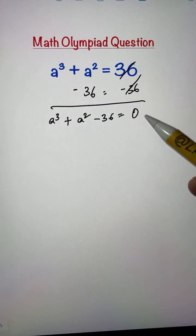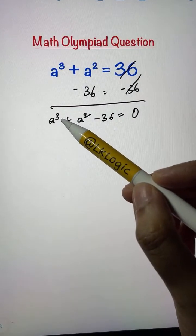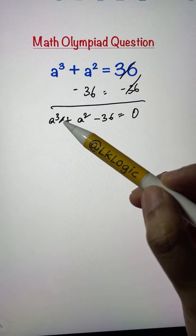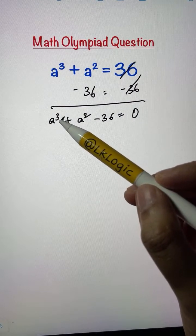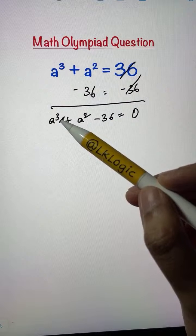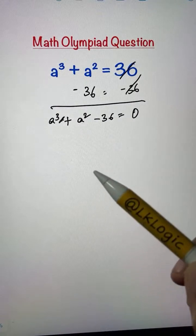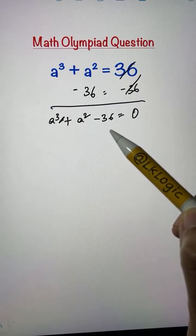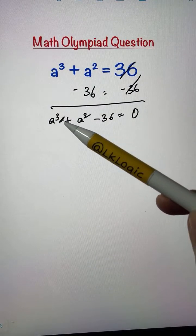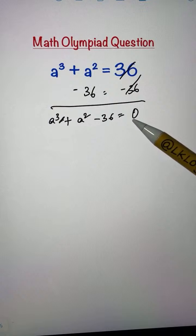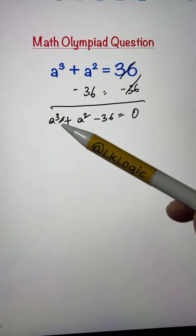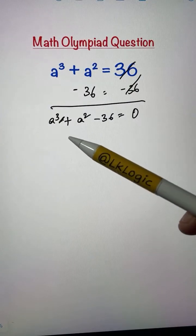Now how are we going to find the factors? This is a cubic equation, which means it has three solutions — or three roots, as we say in mathematics. Are they real roots or complex roots? We don't know yet. To find out, we're going to use the trial and error method — putting values in place of the variable 'a' and checking if the equation holds true. I'm going to try a equals 3.